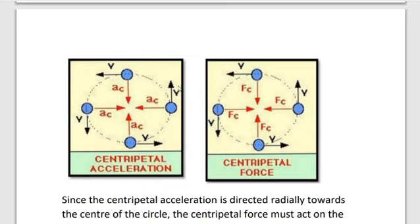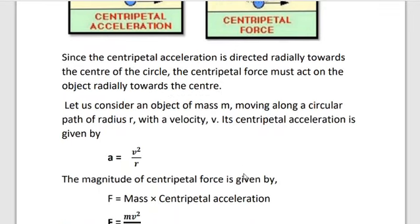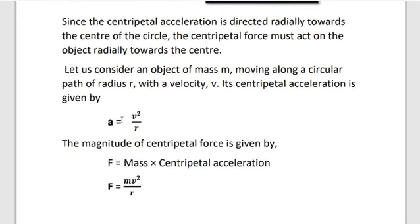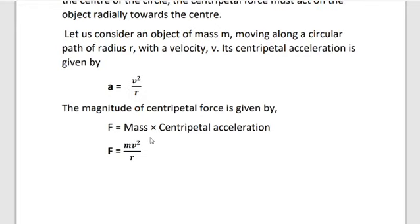The stone moves in the circular path — this is called centripetal acceleration, and the force is centripetal force. Centripetal means moving or tending to move towards the center of the circle. See the diagram — the stone at all points in the circle is directed towards the center. AC indicates centripetal acceleration and Fc indicates centripetal force. Consider an object of mass m moving along a circular path of radius r with velocity v. Its centripetal acceleration is given by a equals v squared by r. Since F equals ma, substituting the acceleration: F equals m times v squared by r.